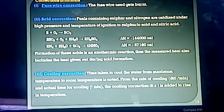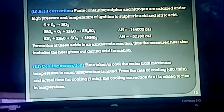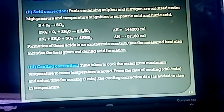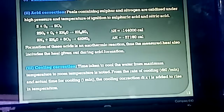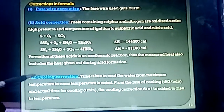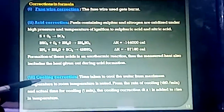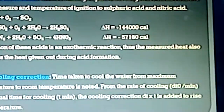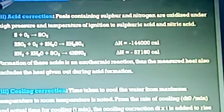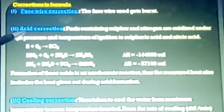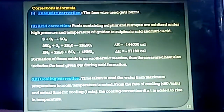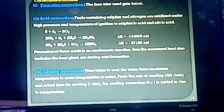The third correction is cooling correction. If the time taken for the water in the calorimeter to cool from the maximum temperature to room temperature is x minutes, then the rate of cooling should be added to the rise in temperature. To summarize: fuse wire correction is subtracted, acid correction is also subtracted, and cooling correction is added to the total GCV.